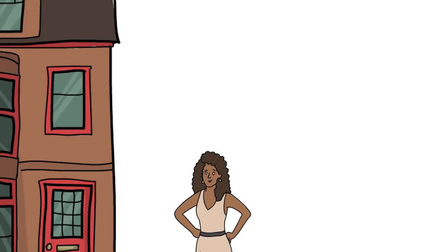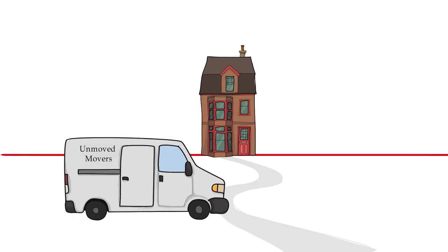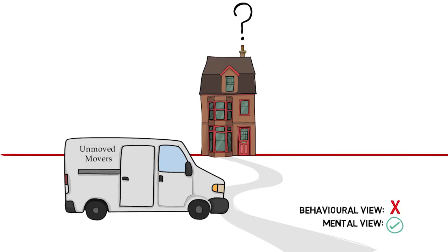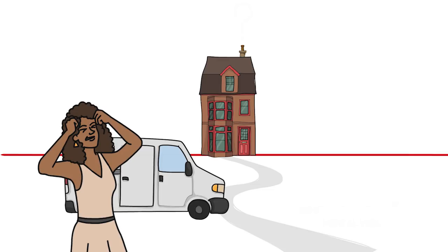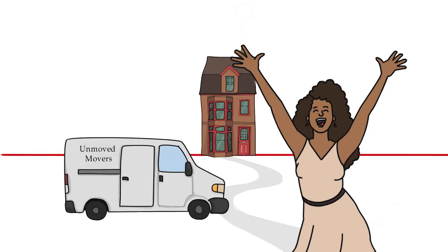Suppose your neighbour puts a note through your door asking to park a moving van in your driveway. You think, 'Sure, that's fine,' but you forget to reply. Even though your neighbour hasn't heard from you, she assumes that you don't mind and parks the van in your driveway. Has she acted permissibly? According to the behavioural view, your neighbour did not have your permission — you hadn't indicated consent, so she wasn't properly authorised to use your driveway. But according to the mental view, she has acted permissibly. After all, you didn't mind her using the drive, and the mental view says you've consented if you don't mind the behaviour. Since you didn't in fact mind, the mental view implies that your neighbour did have your permission after all.